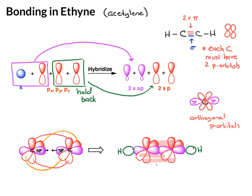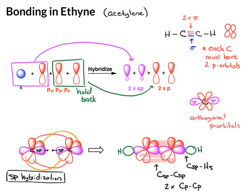So for the carbons, we have carbon sp–carbon sp overlap, and then two carbon p–carbon p overlaps. If you want to describe the C-H bond, it's a carbon sp overlapping a hydrogen s-orbital. A couple features of an sp hybridized carbon: the bond angle between the hybrid orbitals is 180 degrees, and the geometry is linear.